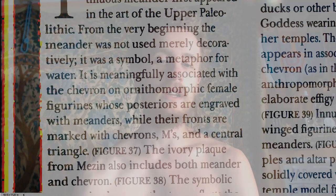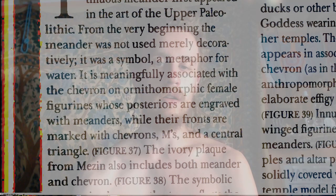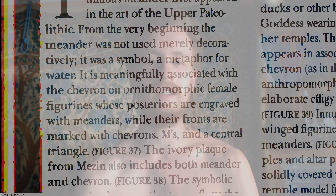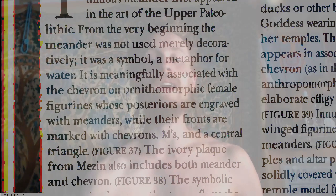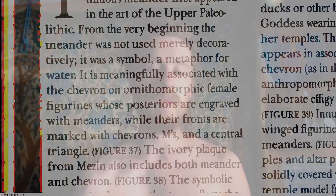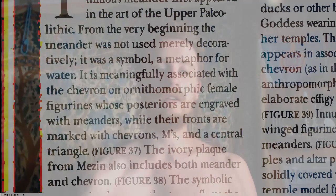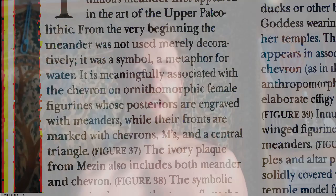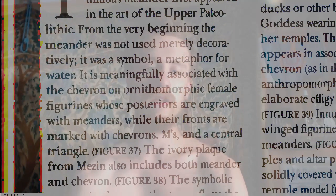It is meaningfully associated with the chevron on bird-shaped female figurines whose posteriors are engraved with meanders, while their fronts are marked with chevrons, Ms, and central triangles — figure 37 on the next page.